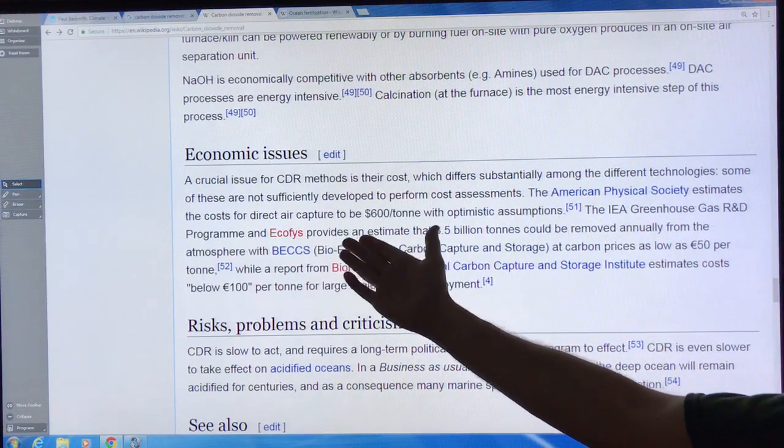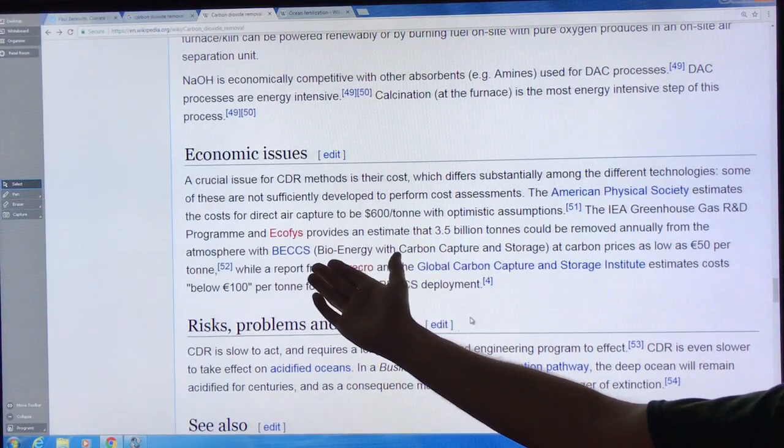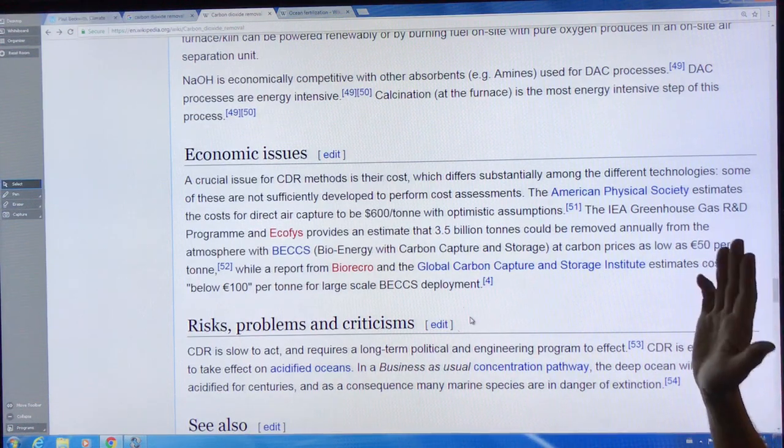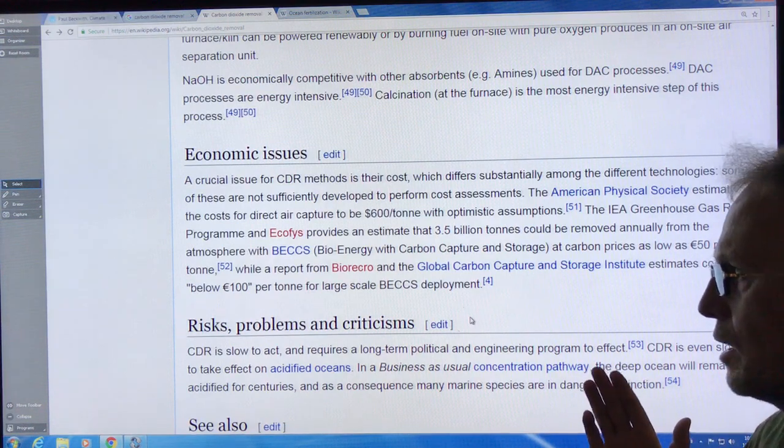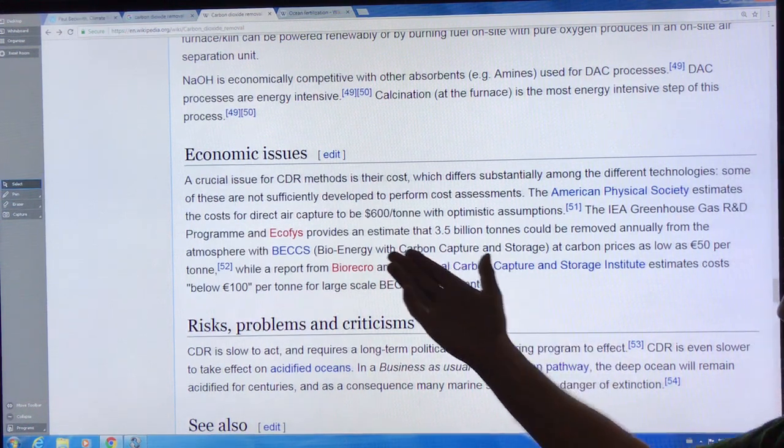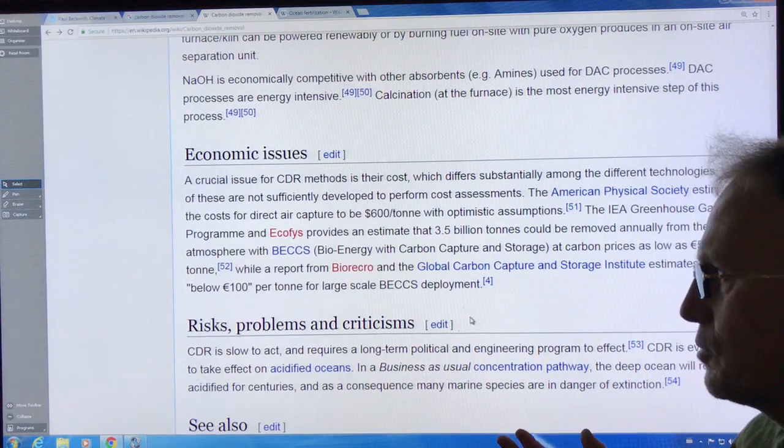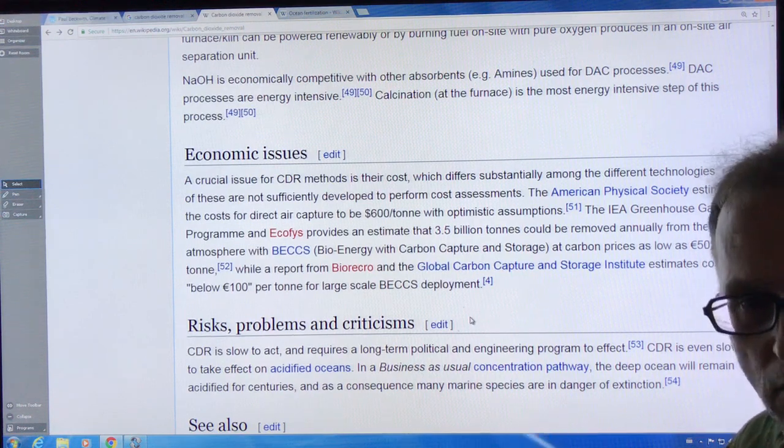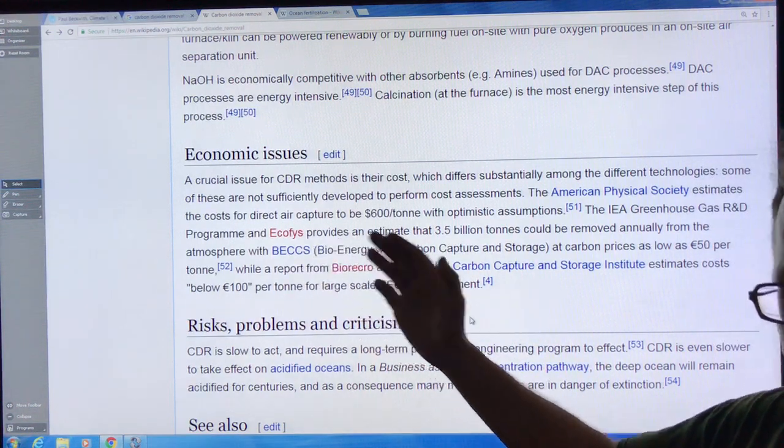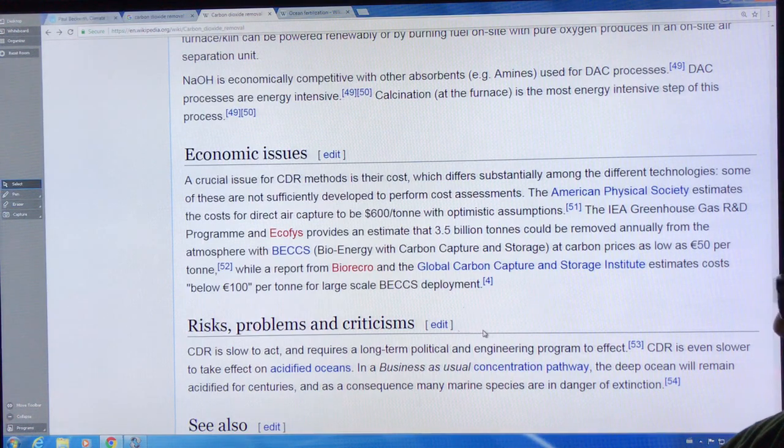One of the things with all these methods is the cost. The American Physical Society estimated direct air capture at $600 a ton. 3.5 gigatons using bioenergy with carbon capture and storage at $50 per ton was estimated. But the big limitation - I'm not a big fan of BECCS, which is pushed by the Intergovernmental Panel on Climate Change, because you need to grow organic material, then you're going to burn to capture the carbon. Where do you grow this stuff on the land? You're going to displace huge amounts of agricultural crops. As our population increases and we're using more of the land surfaces, we have less and less land for doing this type of thing.